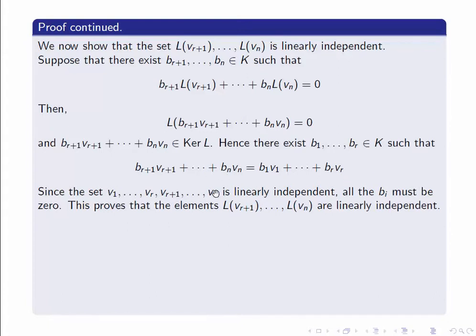But the set V1 up to Vn is a basis for the bigger space V, so it is certainly linearly independent. The only way we can have such a relationship is if all the Bi's are zero. In particular, Br+1 up to BN all have to be zero. So we've proved that if a linear combination of the L(Vi)'s equals zero, then all the coefficients must be zero — that's exactly the statement that this set is linearly independent.